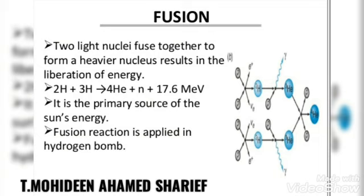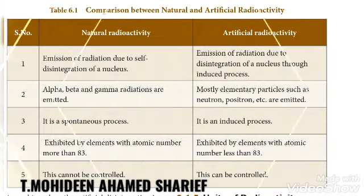We have learned that energy can be produced when a heavy nucleus is split into smaller nuclei — this phenomenon is nuclear fission. In nuclear fusion, two light nuclei are fused together to form a heavier nucleus, resulting in the liberation of energy. Two hydrogen atoms are combined to form helium plus a neutron, producing 17.6 MeV by releasing energy of about 3.84 × 10⁻¹² joules.